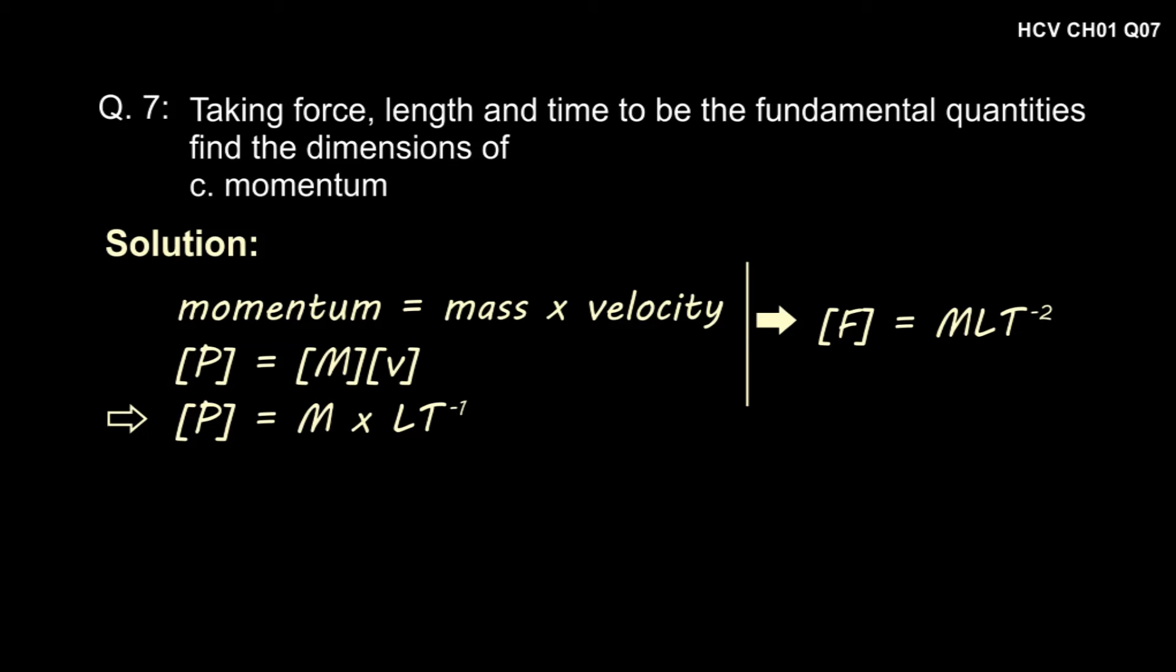Now, dimension of force is MLT to the power minus 2. Thus, we can write dimension of momentum as MLT to the power minus 2 into T. Thus, dimension of momentum is force into time, that is FT.